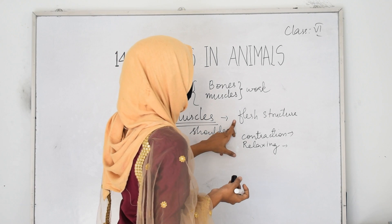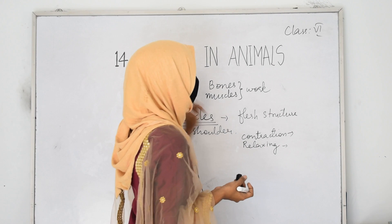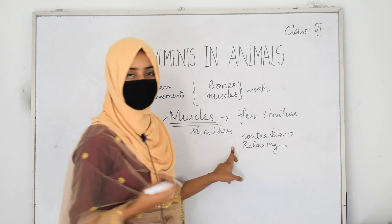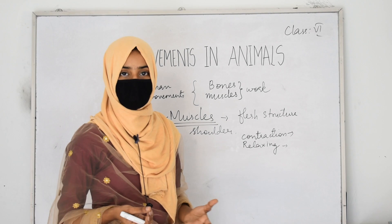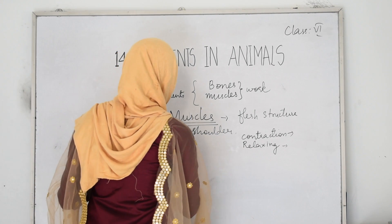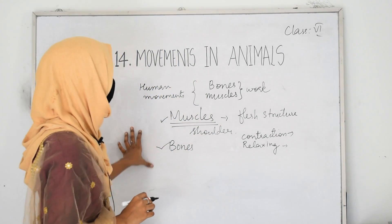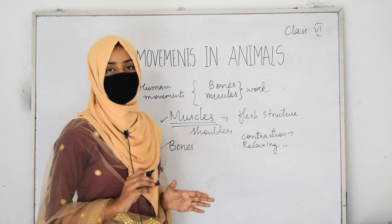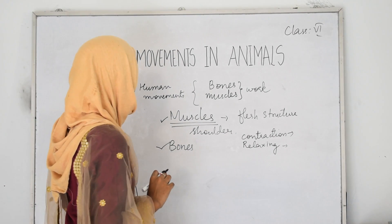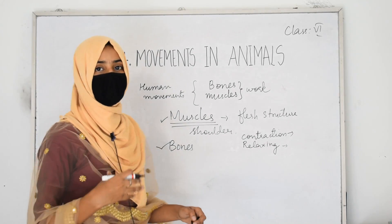So muscles are fleshy structures present beneath our skin. On contraction and relaxation, they help us to show various movements in our body parts. Now let us talk about bones. Bones and muscles work together in a coordinated manner to show the different movements of our body parts.